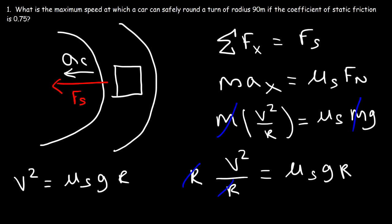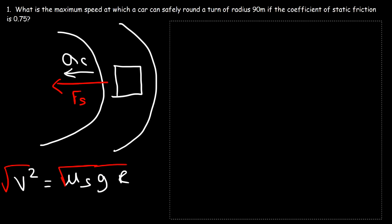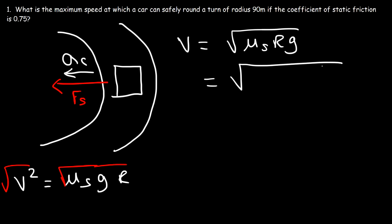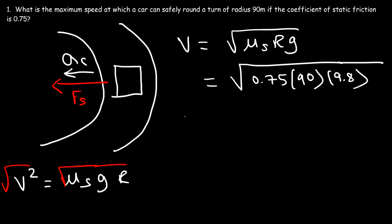Taking the square root of both sides, the maximum speed the car can safely make the turn is equal to the square root of mu_s times r times g. So that's the square root of 0.75 times 90 times 9.8 meters per second squared. The answer is about 25.7 meters per second.